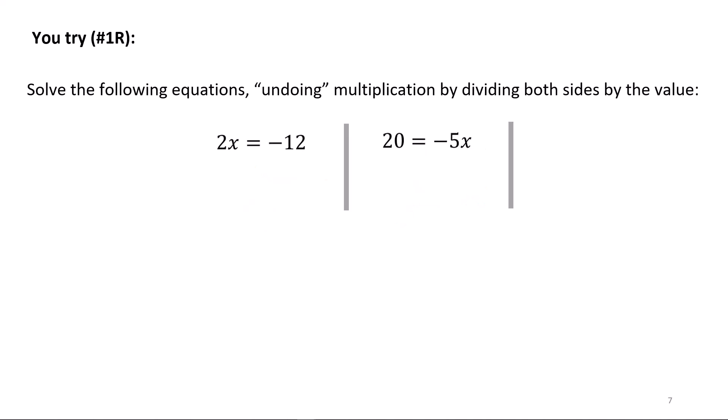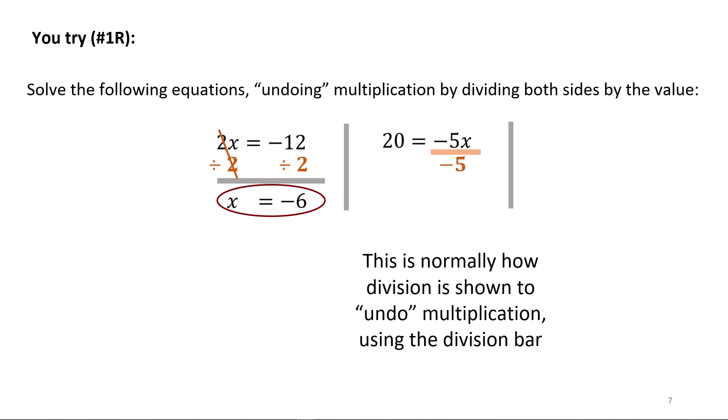Try these two. Here we have 2x equals negative 12 — the first time we've seen multiplication. To undo multiplication, we divide both sides by the value. We divide by 2, cancel the 2s, and x equals negative 6. Circle the solution. The normal way to show division is using the division bar. Here we divide both sides by negative 5, cancel the negative 5s, leaving negative 4 equals x. Try these two.